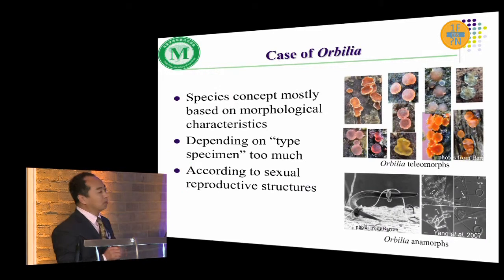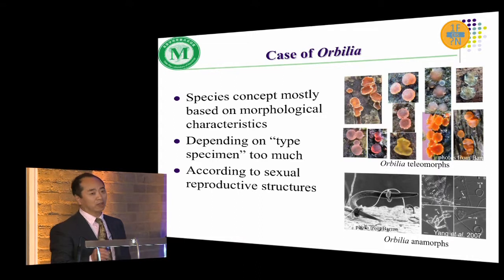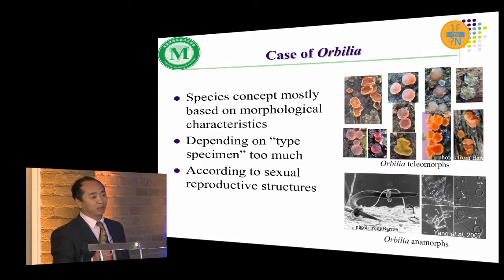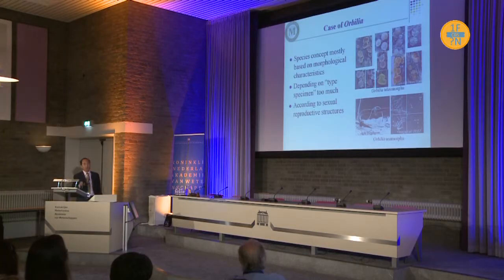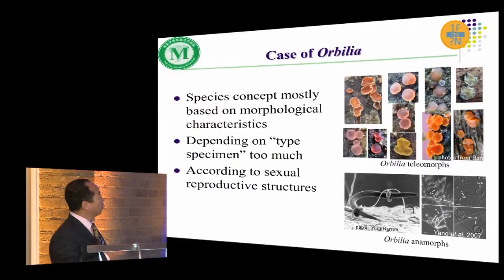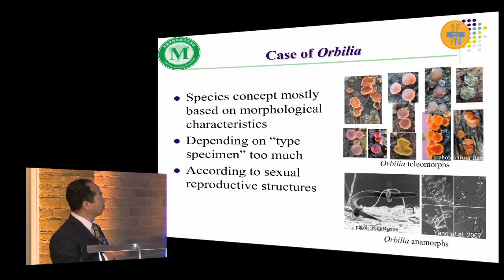About 10 years ago I asked Professor Win-Yin Zhuang should we have one student work on Orbilia, because she told me that Professor Koff said don't touch Orbilia for student theses. But I work on nematode-trapping fungi, so we agreed to have one student work on Orbilia. We found that the species of Orbilia are mostly based on morphological characteristics, depending much on the type specimen and also on sexual stage morphology.